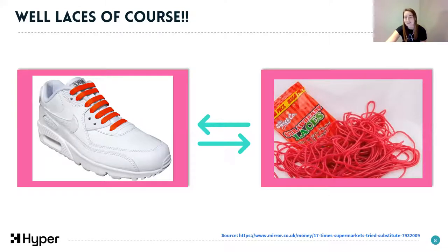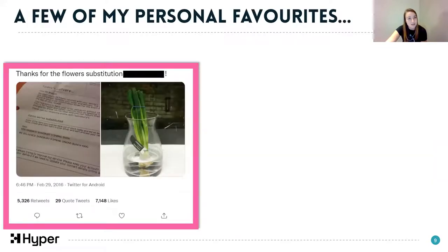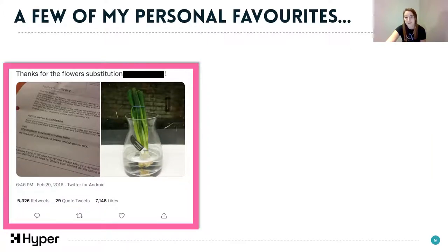I've now got some quickfire ones I found on a fantastic Twitter thread called Substitution Fails - definitely check it out, it's a good read. So this poor person ordered a nice bunch of spring flowers, but unfortunately this got substituted for a bunch of spring onions. But thankfully they've maintained their sense of humour and put them in a vase just for the purpose of the tweet.